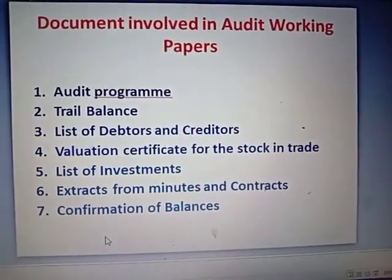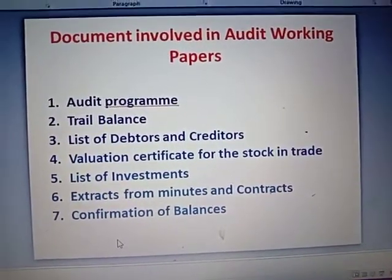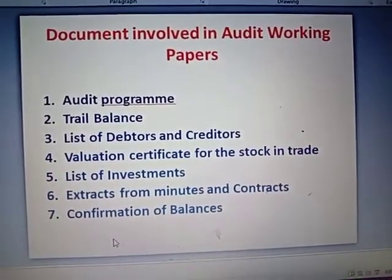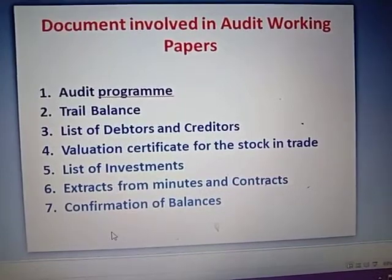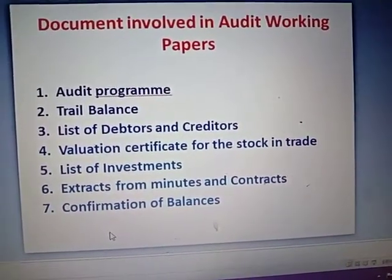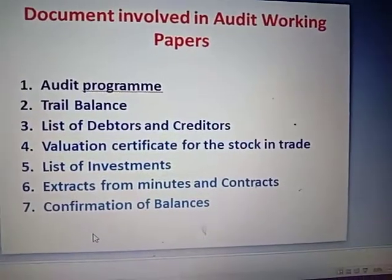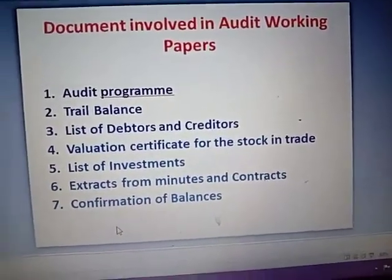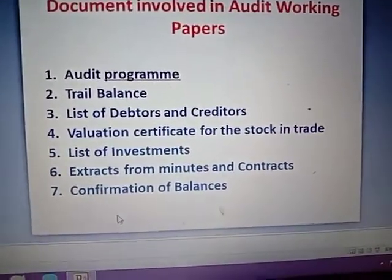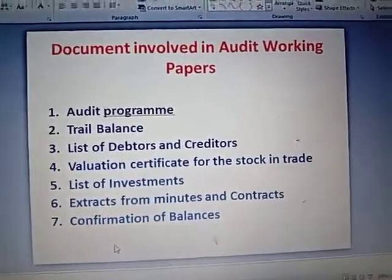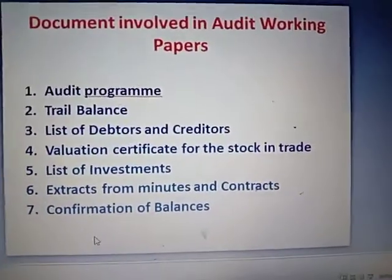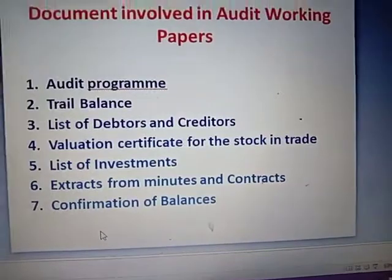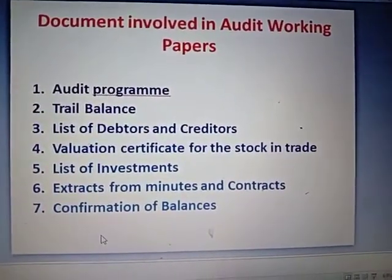Assets — your assets include current assets and fixed assets; all the assets are available. In addition, liabilities and property details are also added. Add the balance amount and all the details in the audit working paper.